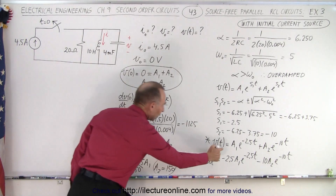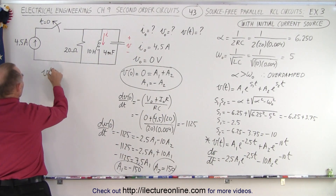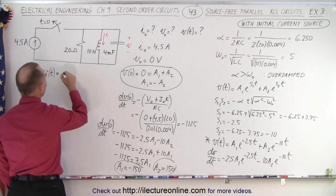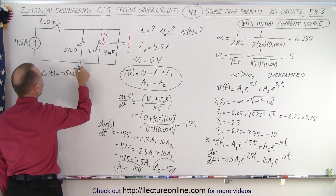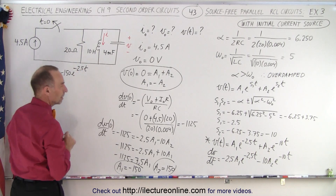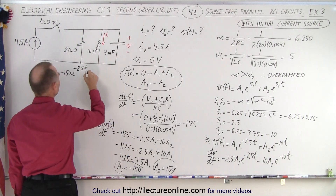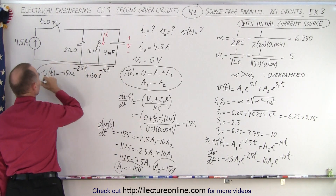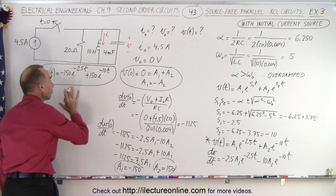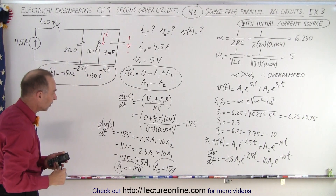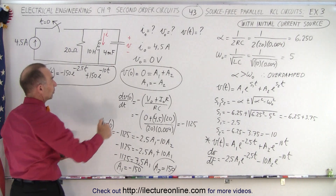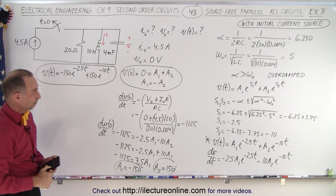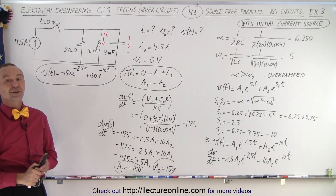Plugging A1 and A2 into our equation, the voltage as a function of time is: v(t) = −150·e^(−2.5t) + 150·e^(−10t). This equation gives us the voltage for t ≥ 0. We now have the initial current (4.5 A), initial voltage (0 V), and the voltage equation — which is what we needed, and that is how it's done.